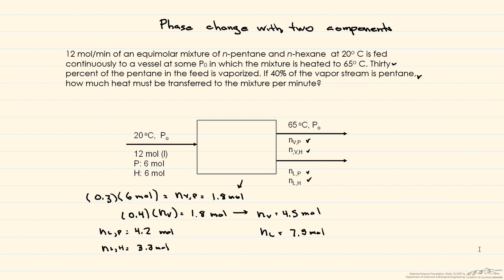So let's make sure we have this. So we have our NVP, our NLP, our NLH, and now all we have to do is figure out the number of moles of vapor that are hexane, and we can do that just using a hexane balance. So we know that 6 moles come in, and we know that in the liquid stream, it's 3.3 moles, therefore, there are 2.7 moles of hexane in the vapor stream.